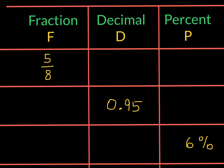In the first row, 5 divided by 8 gives us 0.625. If we take our decimal and we want a percent, we're going to multiply by 100, move the decimal two places to the right, and we will get 62.5%.